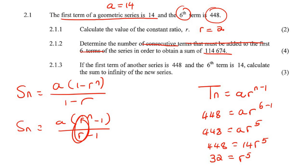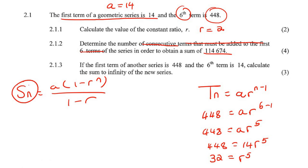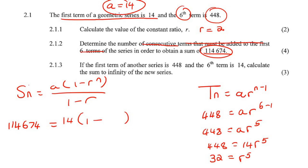Students always ask whether it makes a difference which formula you choose — it doesn't, just keep the numerator and denominator consistent. So I'm going to choose this one. The sum is 114674, a is 14, r is 2, and n is unknown. I would simplify 1 minus 2 to get negative 1, giving us 114674 equals that expression. Multiplying across and dividing by 14 gives negative 8191 on the left side.